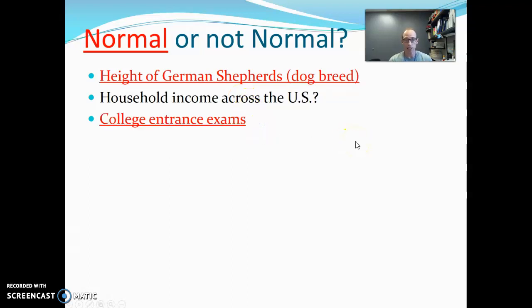College entrance exams, as we looked at, are forced to be normal. Staying in the hospital is often a right tail distribution. You have a lot of people that are out within one day, but then you have this tailing right tail that goes off and off with people staying there even up to a year long-term hospital stay.